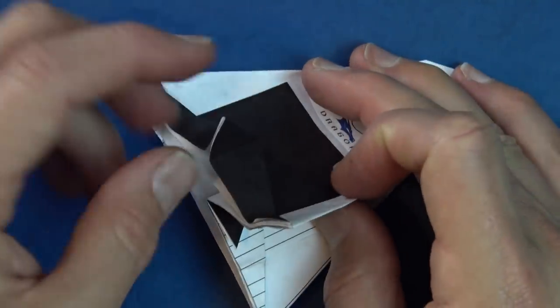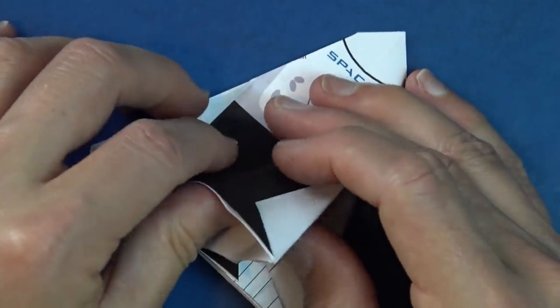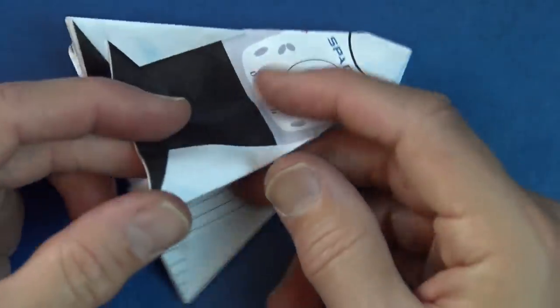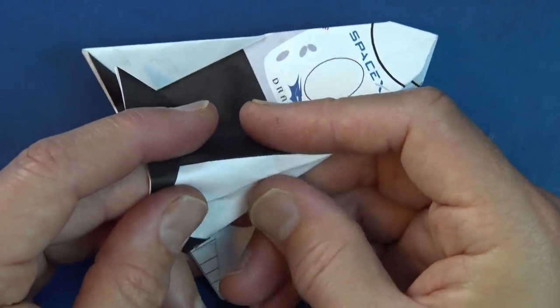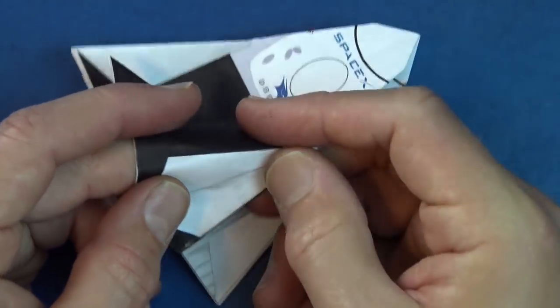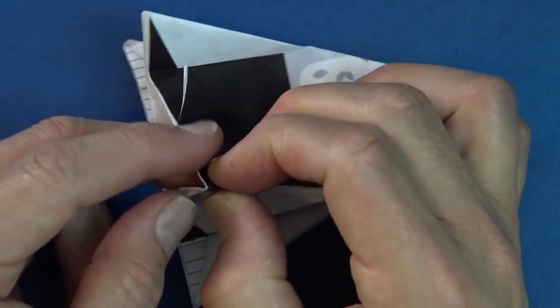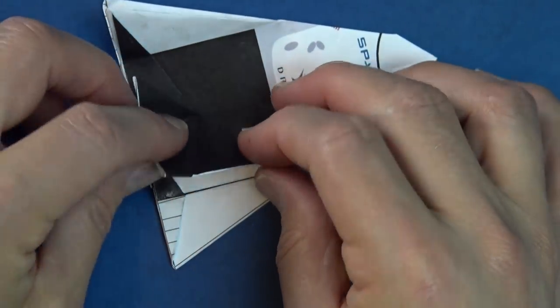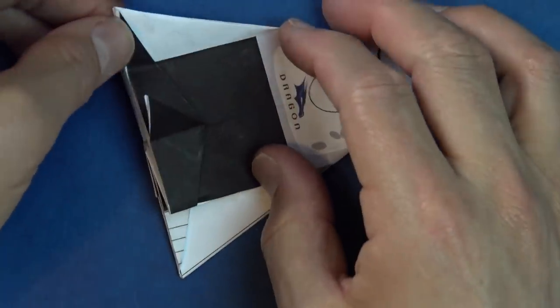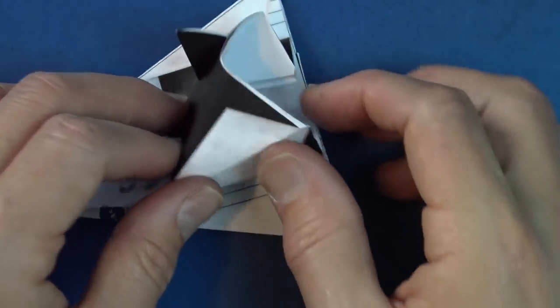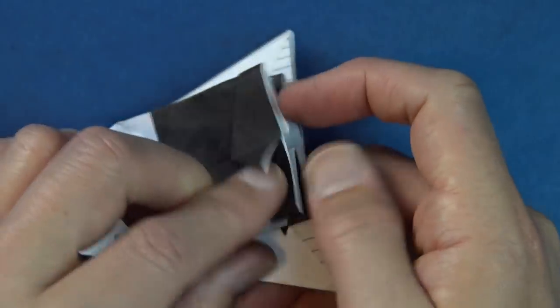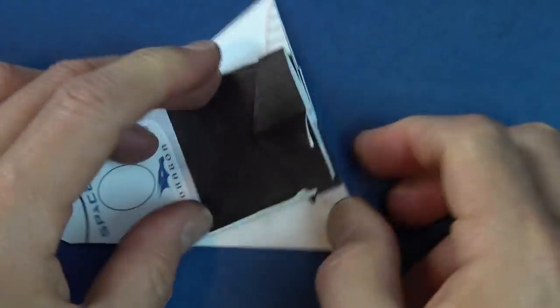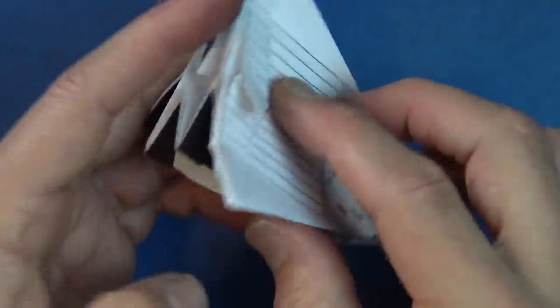Now we're going to reverse fold these flaps. So open here. And you're going to fold. Just push it in on the existing creases. So fold here. And here. And flatten. And repeat on this side. Open. And push it in. Like that. And repeat on this side.